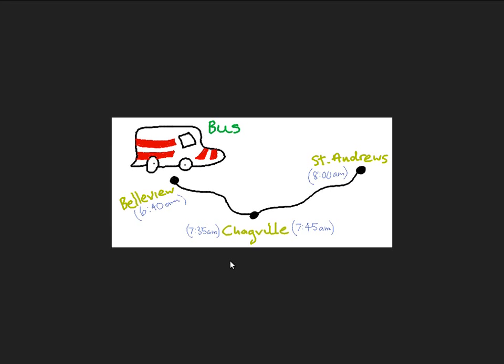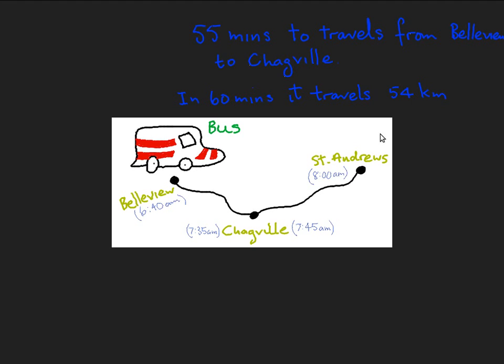And finally, we're told that the bus travels at an average speed of 54 kilometers per hour from Bellevue to Shackville. Calculate in kilometers the distance from Bellevue to Shackville. The bus travels at an average speed of 54 kilometers per hour, so in one hour — or 60 minutes — it travels 54 kilometers. But the bus didn't travel for 60 minutes; the bus traveled for 55 minutes.